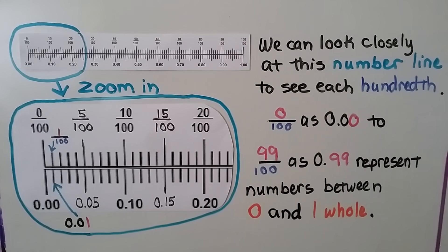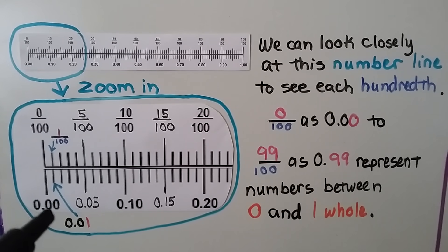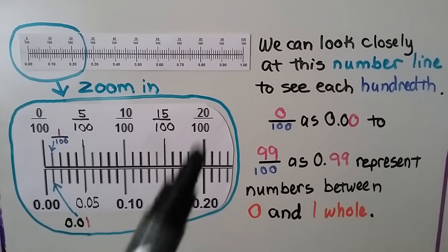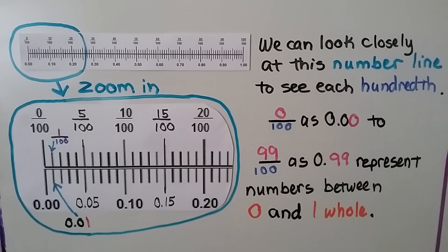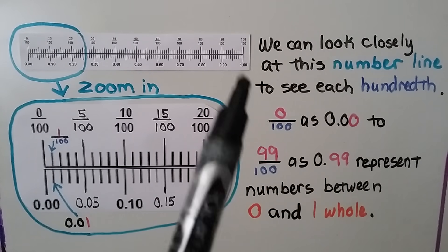We can see 0 hundredths written as 0.00, going up to 99 hundredths written as 0.99. These represent the numbers between 0 and 1.